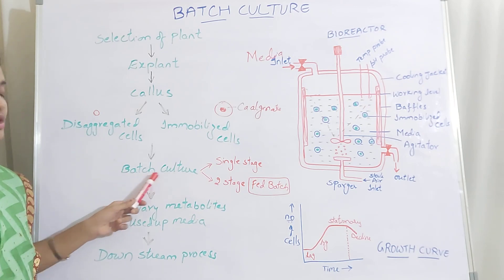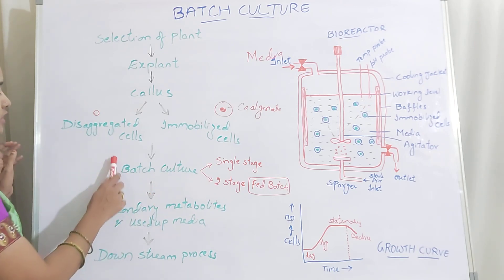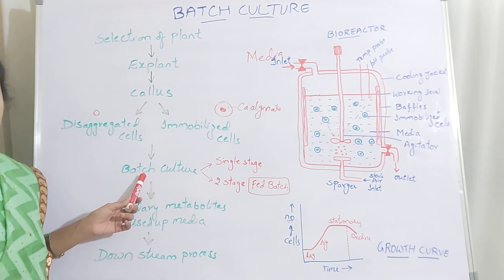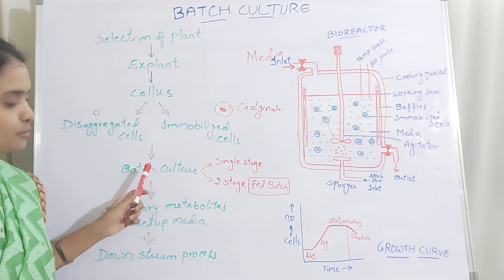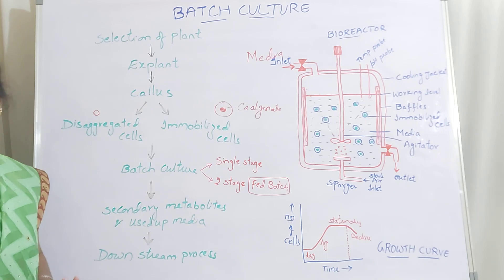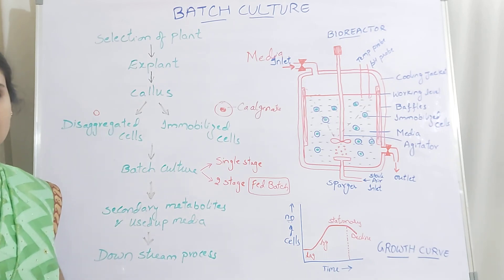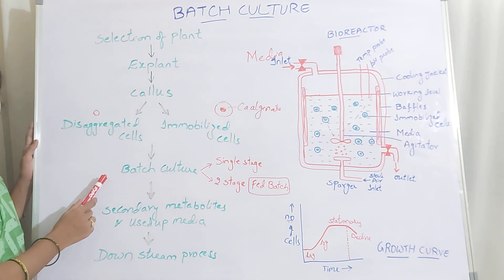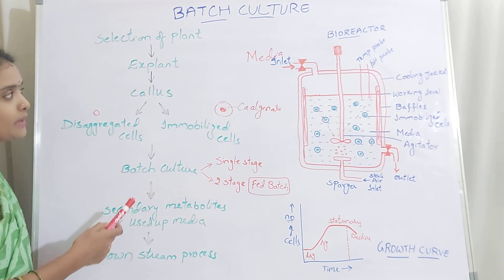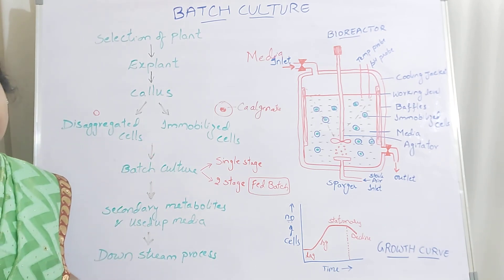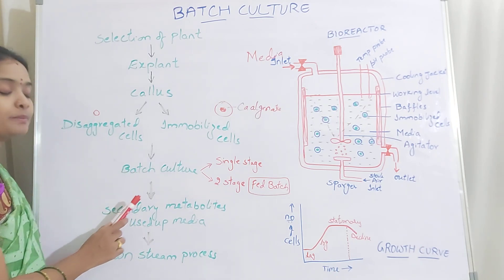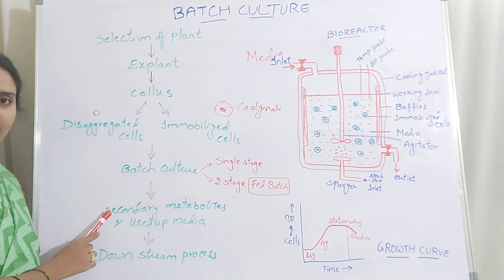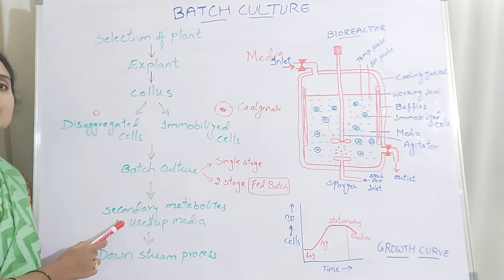After the batch culture process begins, in the batch culture you provide the media required for your plant cells — all the nutrients required — and maintain the environmental conditions such as pH and temperature. Precursors and everything will be added which will help or enhance the plant cells to produce your required secondary metabolite. Once the secondary metabolite production is done, you have to collect all the secondary metabolites along with the cells and also with the used-up media.